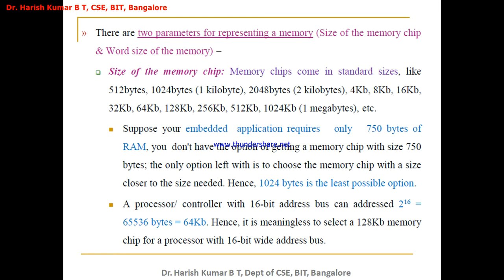There are two parameters for representing memory. One is the size of the memory. The standard size of memory comes in sizes like this: 1 byte, 2 bytes, 4 bytes, 16 bytes, 32 bytes, 64 bytes, 128 bytes, 256 bytes, 512 bytes, and 1024 bytes. 1024 bytes is nothing but 1 kilobyte, and 2048 bytes is nothing but 2 kilobytes. So the memory comes in these standard sizes.